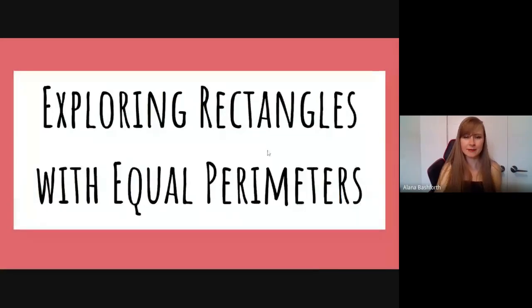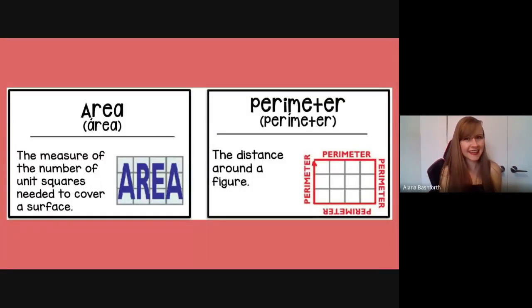In this lesson, we are going to be looking at perimeter and area, but specifically, we're going to be looking at rectangles with equal perimeters. So they'll have different areas, but equal perimeters. And so let's go through the lesson together.